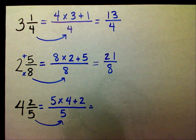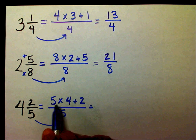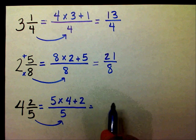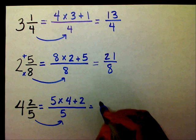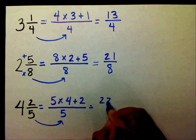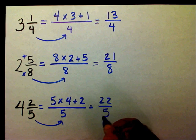So I have five times four, which is twenty, and twenty plus two is twenty-two over five.